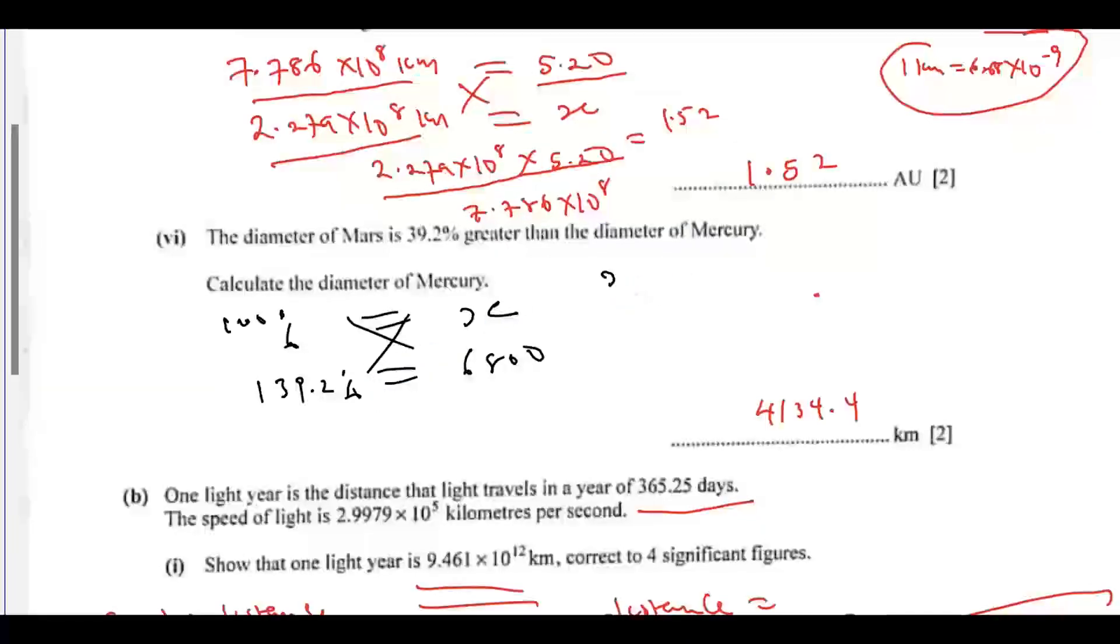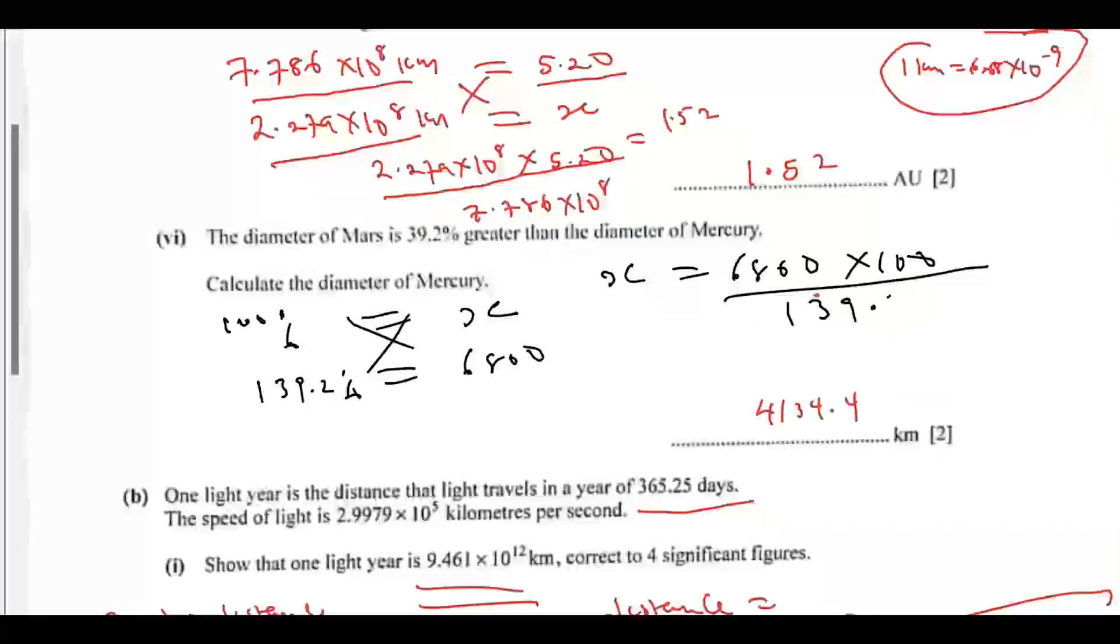If you do this, it will give you x equals to 6,800 multiplied by 100 divided by 139.2. If you do that, that will give you 4,800. Let's go to the next one.